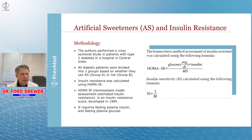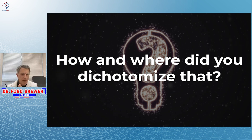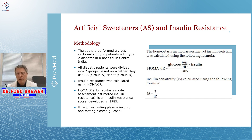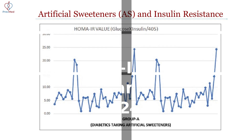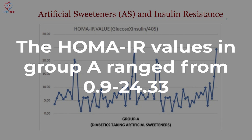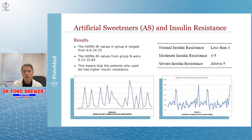Now you've created a dichotomy. The question is, how and where did you dichotomize that? Did you say one sweetener per day, or X amount of milligrams? Which sweeteners did you look at? These are questions that come up as you start to get deeper in trying to analyze a study which says artificial sweeteners cause insulin resistance. They looked only at diabetic patients. The HOMA-IR values in group A ranged from 0.9 to 24.33. The HOMA-IR values from group B were 0.12 to 10.83. The patients in group A, who gave a history of using more artificial sweeteners, did have higher HOMA-IRs.